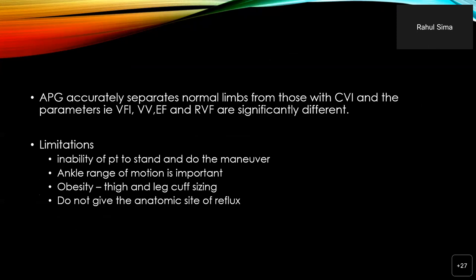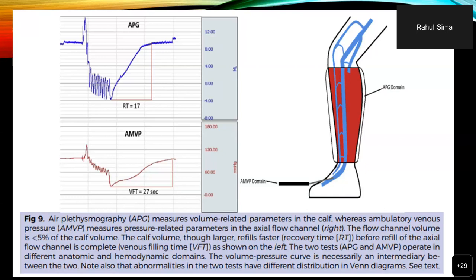Air plethysmography accurately separates normal limbs from those with chronic venous insufficiency. Parameters such as venous filling index, venous volume, ejection fraction, and residual venous fraction all show significant differences. Limitations include the inability to be done in patients who cannot stand or perform maneuvers, limited range of ankle movement, and obesity as a limiting factor as the cuffs may not fit. These tests also do not give the anatomical site of reflux. Air plethysmography measures volume-related parameters of the calf, whereas ambulatory venous pressure measures pressure-related parameters in axial flow.